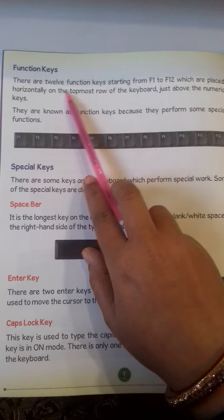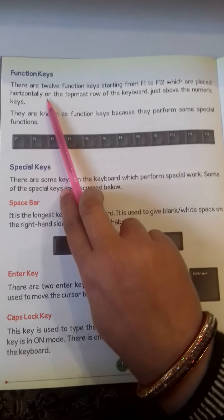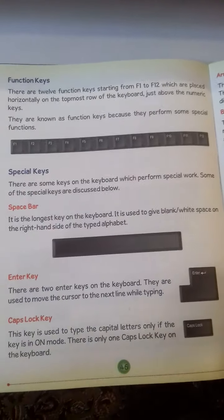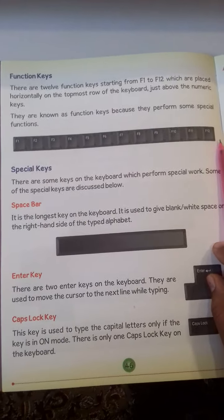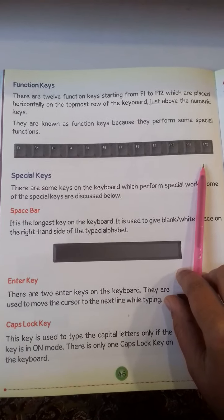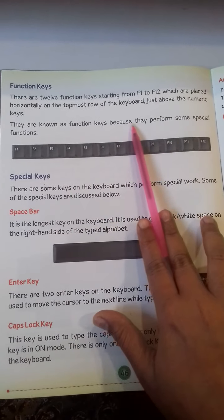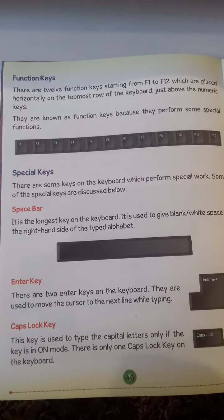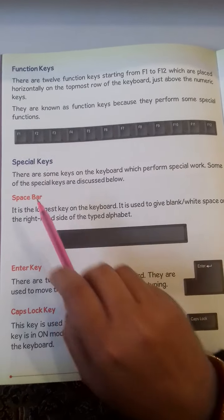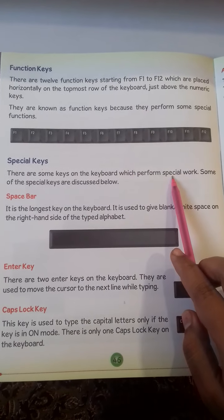Next are the function keys. There are 12 function keys, starting from F1 to F12, which are placed horizontally on the topmost row of the keyboard, just above the numerical keys. They are known as function keys because they perform special functions. There are also some special keys on the keyboard which perform special work.